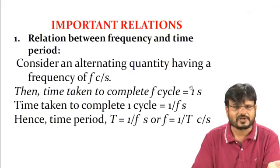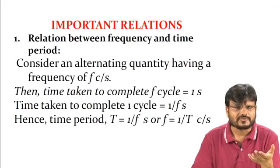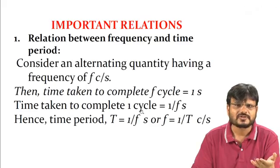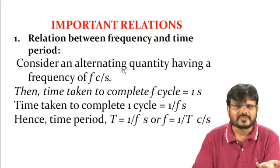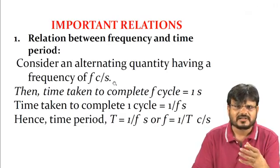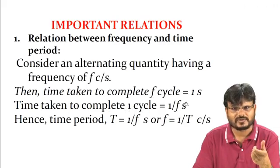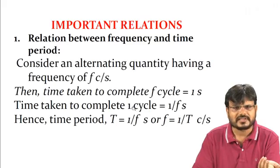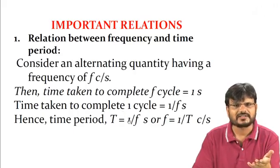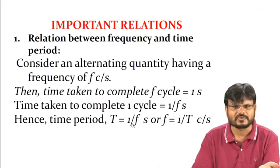The relation between frequency and time period: frequency f = 1/T, meaning it is the reciprocal of time period. Consider an alternating quantity with frequency f cycles per second — in one second f cycles are completed, so the time taken to complete f cycles is 1 second. Therefore the time taken to complete one cycle — the time period T — equals 1/f.